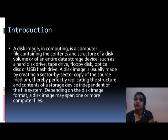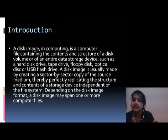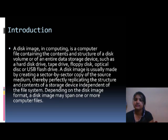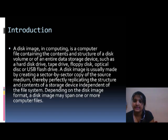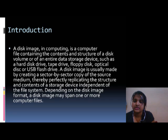Introduction: a disk image in computing is a computer file containing the content and structure of a disk, volume, or of an entire data storage device such as a hard disk drive, tape drive, floppy disk, optical disk, or USB flash drive. A disk image is usually made by creating a sector-by-sector copy of a source medium, thereby perfectly replicating the structure and contents of a storage device independent of the file system.